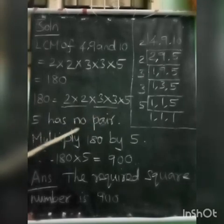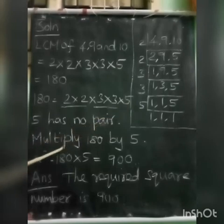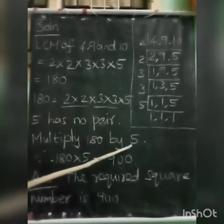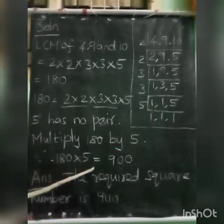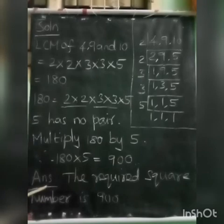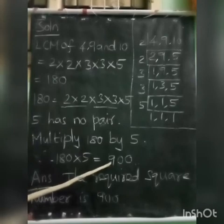Now write 180 as a product of prime factors: 2 into 2 into 3 into 3 into 5. Here 5 has no pair — 5 is not in a pair. So now multiply this 180 by 5. 180 into 5 is 900. Our answer: the required square number is 900.